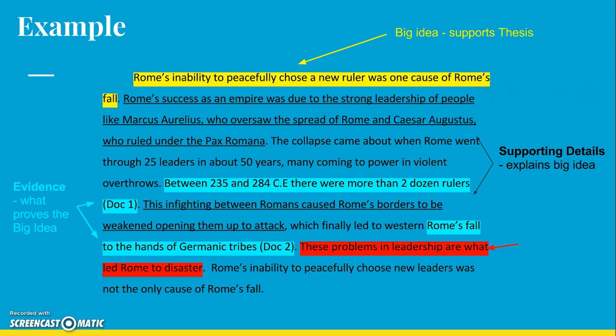And then over at the bottom I have this connecting sentence which I like to put in there again to make it very clear. All these problems that are laid out in the middle and top of the paragraph, these problems in leadership are what led Rome to disaster.